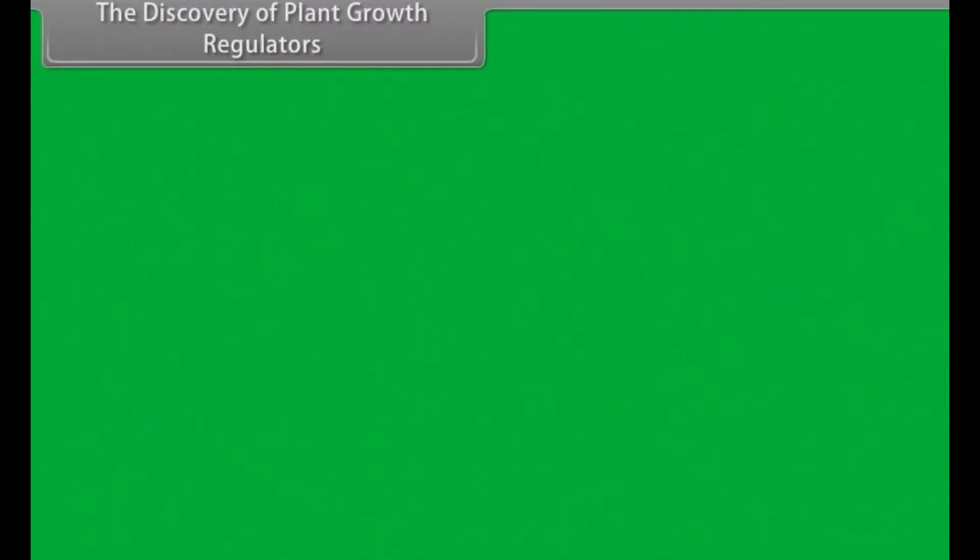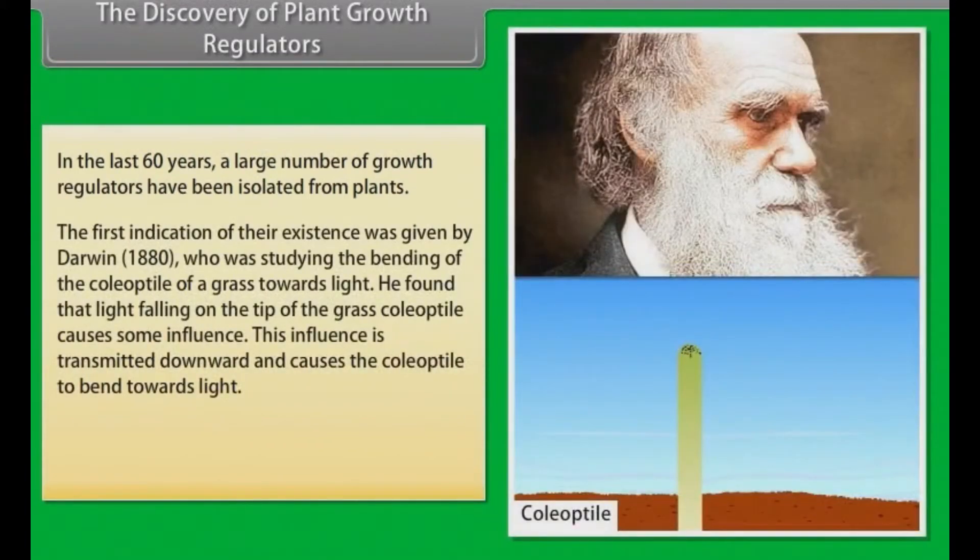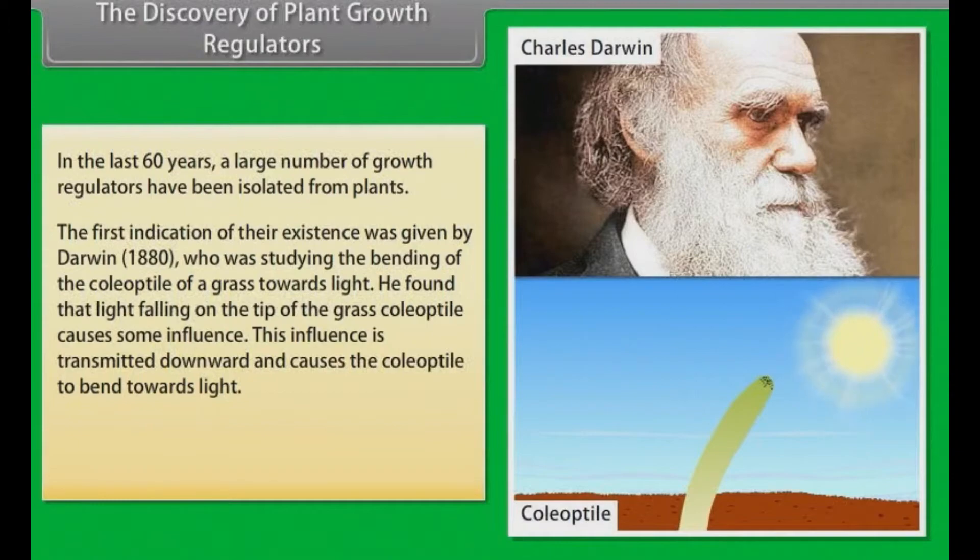The discovery of plant growth regulators. In the last 60 years, a large number of growth regulators have been isolated from plants. The first indication of their existence was given by Darwin, 1880, who was studying the bending of the coleoptile of a grass towards light. He found that the light falling on the tip of the grass coleoptile causes some influence. This influence is transmitted downward and causes the coleoptile to bend towards light.